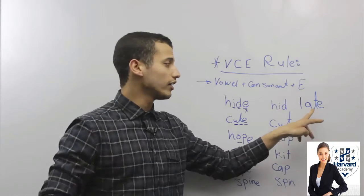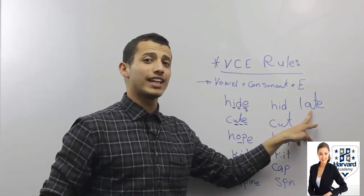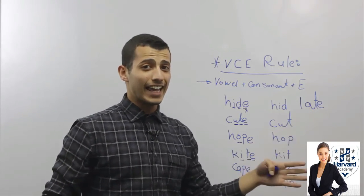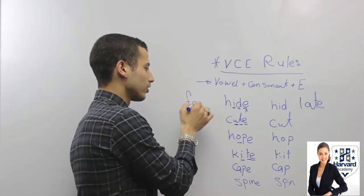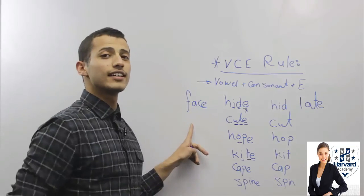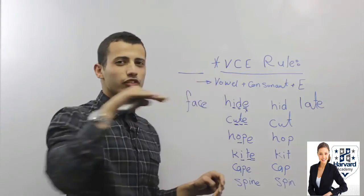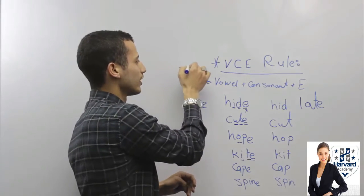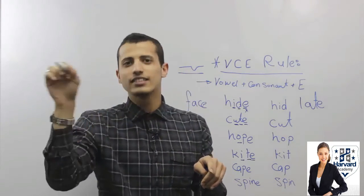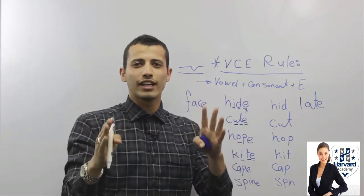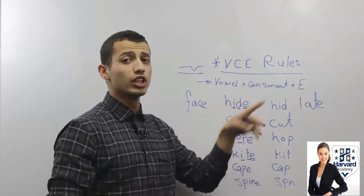For example, this word here — which all of us know — this is 'late.' Why? Vowel plus consonant plus E, so I'm going to pronounce this one as 'A,' which is 'late.' The same here — this is 'face.' Not flat like this, but you want to go like this: face, face, face. Pronounce the whole letter.